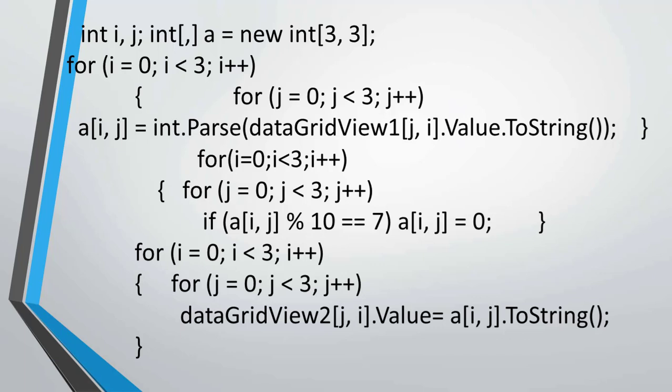First step: we declare the two-dimensional array. Second step: for input elements of the array we use the DataGridView component. Then we use the following conditional check — if the condition is true, the value of the array element equals zero. For output of array elements we use the DataGridView component.